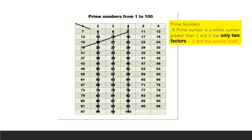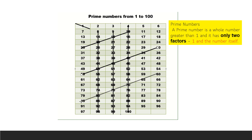Continuing to cross out multiples of 5: 30, 35, 40, 45, 50, 55. The next set of 5 multiples: 60, 65, 70, 75, 80, 85. Then the next: 90, 95, 100. All multiples of 5 are now crossed out.